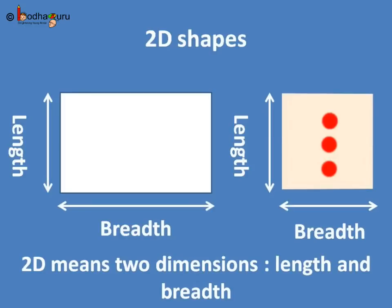When we draw any shape on paper, it has only length and breadth. That is why they are called 2D shapes, like a rectangle or a square. 2D means two dimensions,